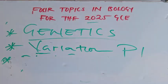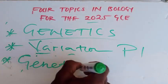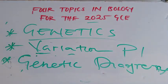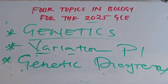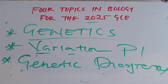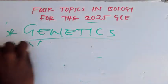The third subtopic under genetics is genetic diagrams. You need to understand how to write genetic diagrams, because in Paper 2 most questions involve writing a genetic diagram. You need to know how to arrange the alleles and how to cross them. I've also recorded a video on this — check the comment box for details.